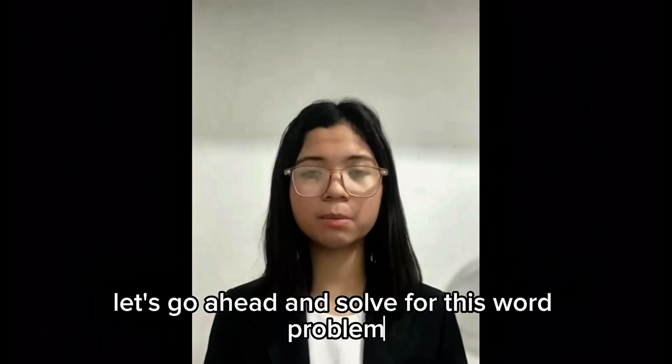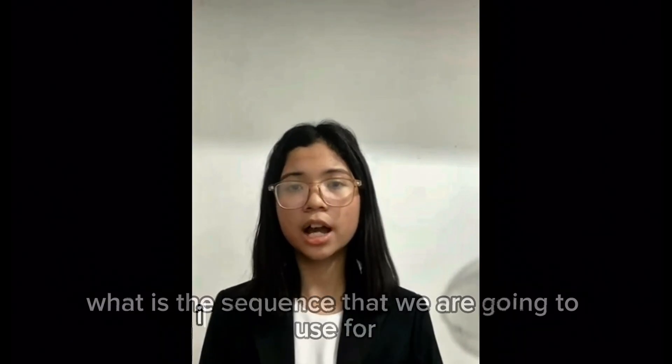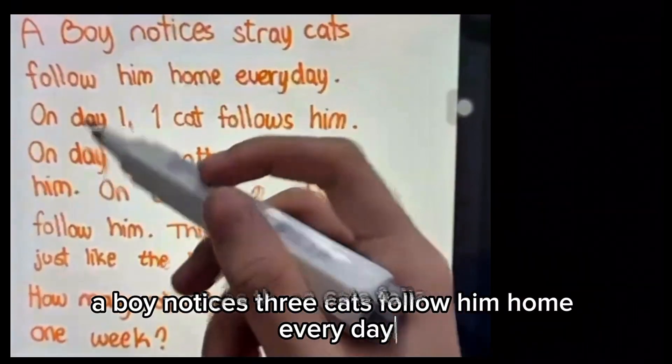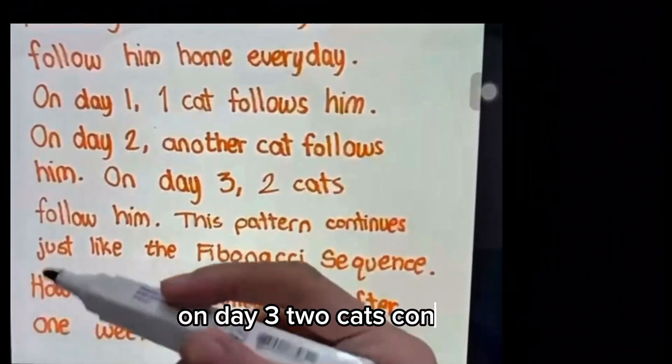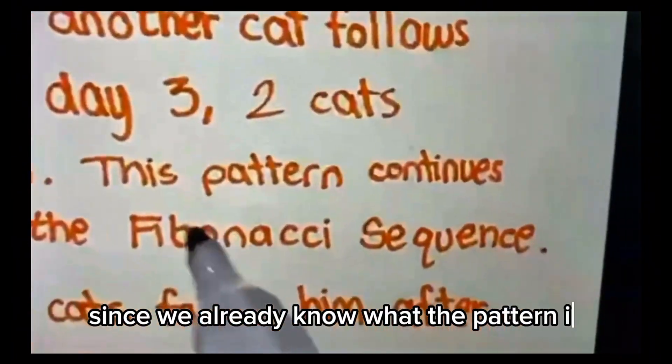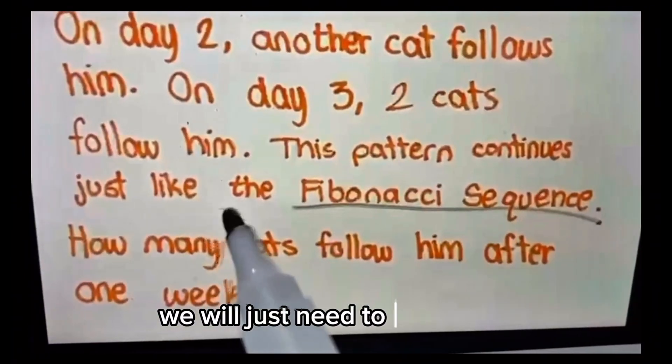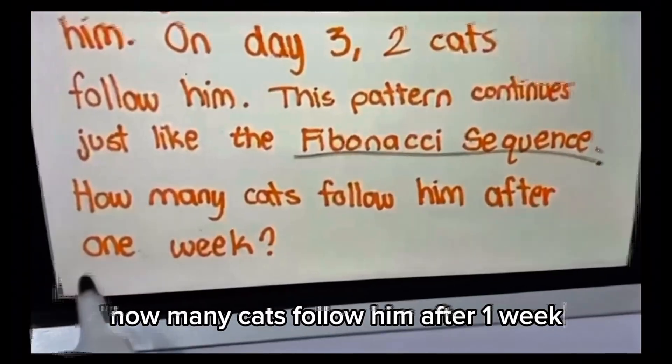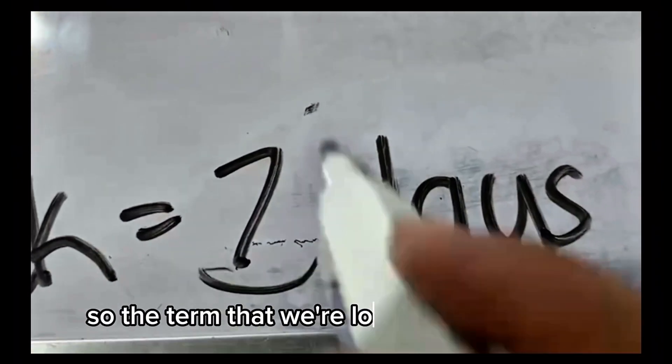Let's go ahead and solve this word problem. Our first step is to analyze the word problem to figure out what sequence we are going to use. A boy notices three cats follow him home every day. On day one, one cat follows him. On day two, another cat follows him. On day three, two cats follow him, continuing just like the Fibonacci sequence. How many cats follow him after one week? Since we already know the pattern is Fibonacci sequence, we just need to determine the term we are looking for. One week is equivalent to seven days. So the term that we are looking for is the seventh term.